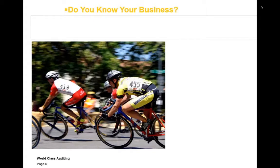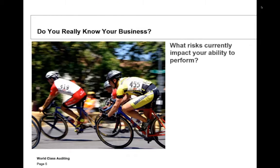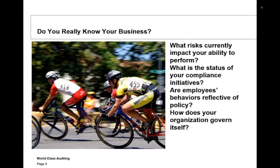Everything we do in auditing and accounting — I'm assuming everyone has a basic background in auditing from the first class with Professor Brown — we're going to draw on that thinking. This is just the next level. The concepts of effective design of a control, the effectiveness of a control, sampling, and all these other things you learned are still applicable. But all auditing and accounting comes from a standpoint of risk. We only have controls and we only have auditing done because of a risk.